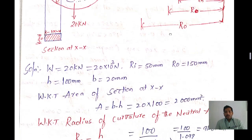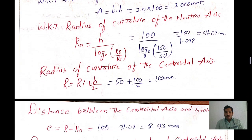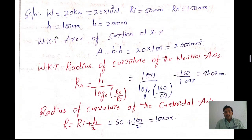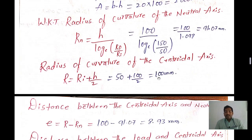Now we find the radius of curvature of the centroidal axis R. For a rectangular bar, the formula is: R = Ri + h/2. With Ri = 50 mm and h = 100 mm: R = 50 + 100/2 = 50 + 50 = 100 mm.